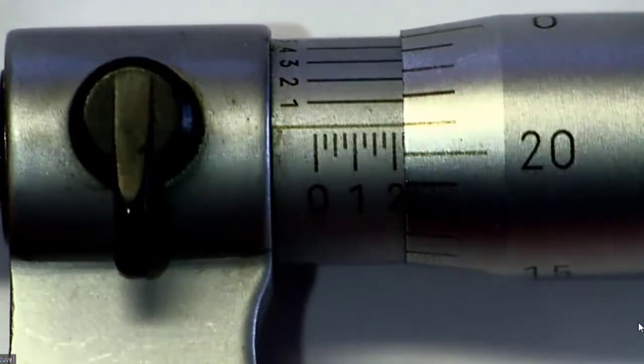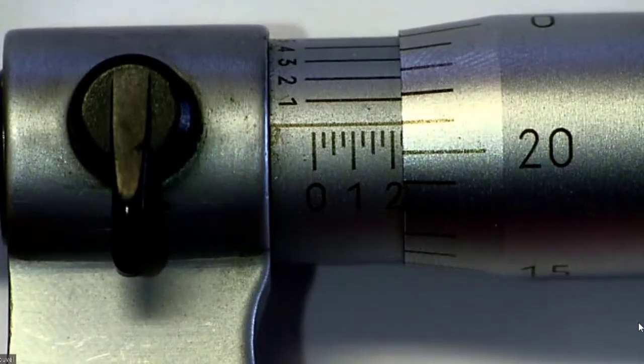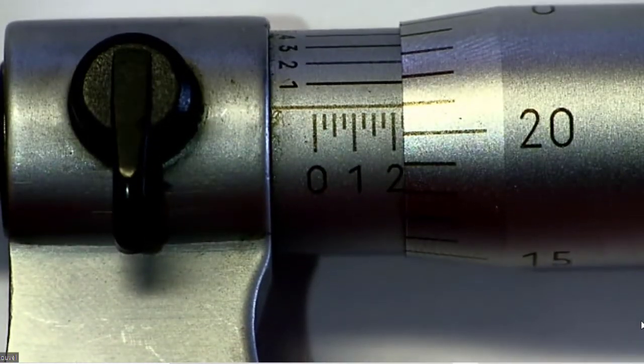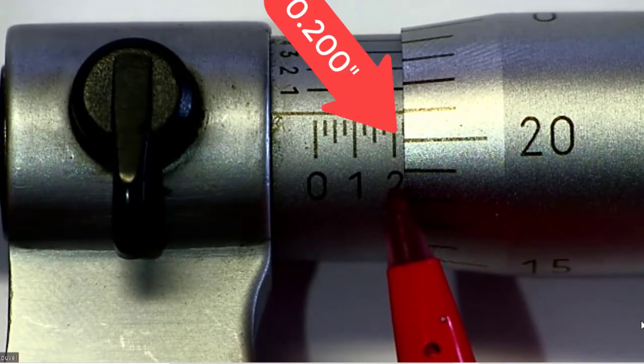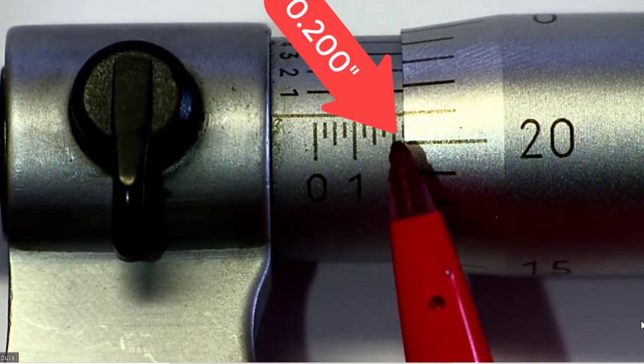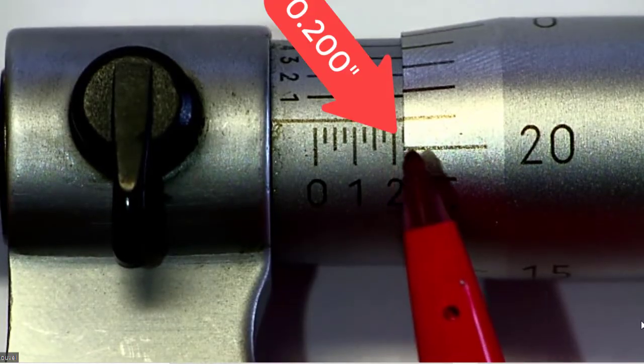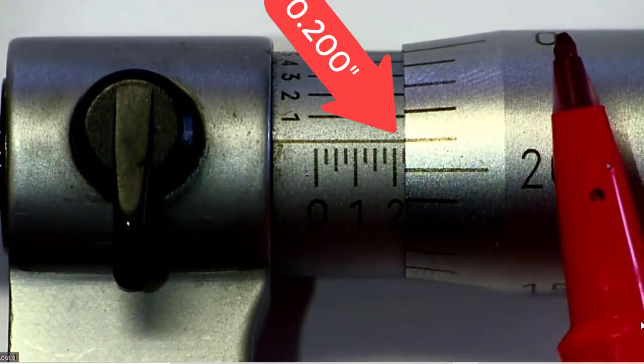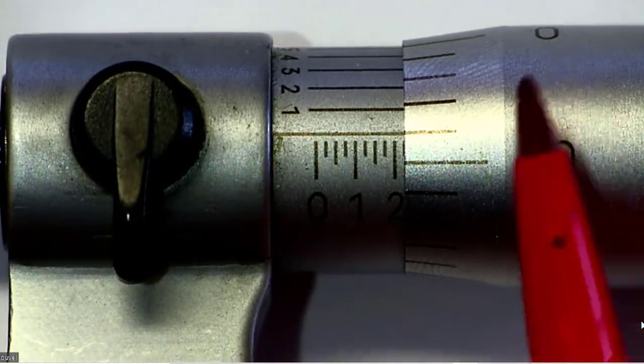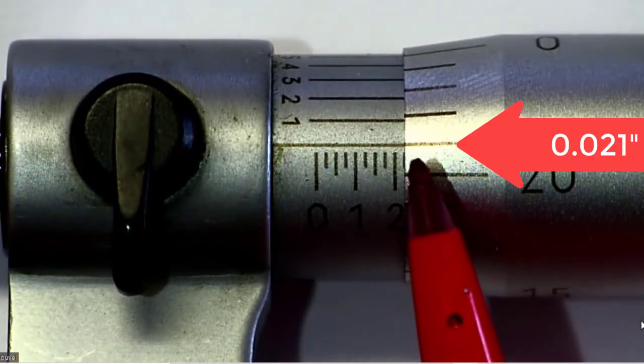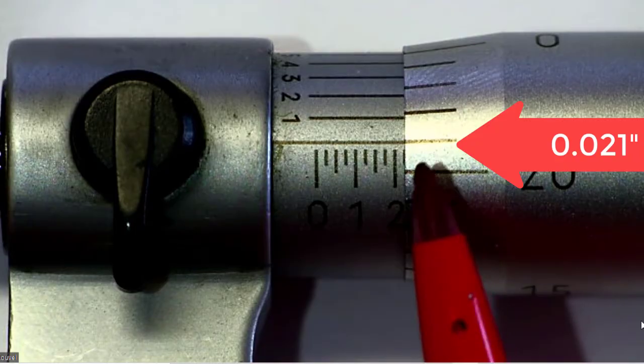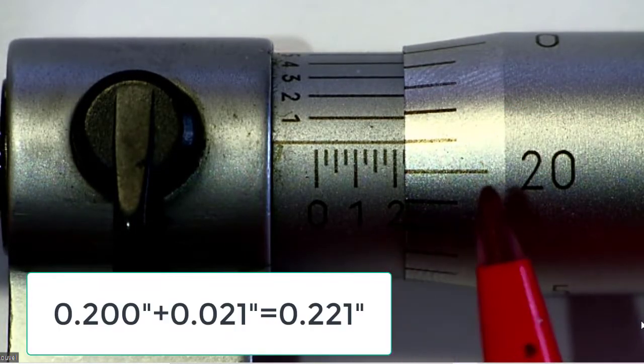One more before I give you one for practice. On this setting, we can see that there's a two visible, so that's .2. You can start to see that tick mark showing through, but we can't count it yet, because we're not rolled up past the zero, so we've not hit .25, and you can see here that we're only at .20, .21, so our reading so far would be .221.